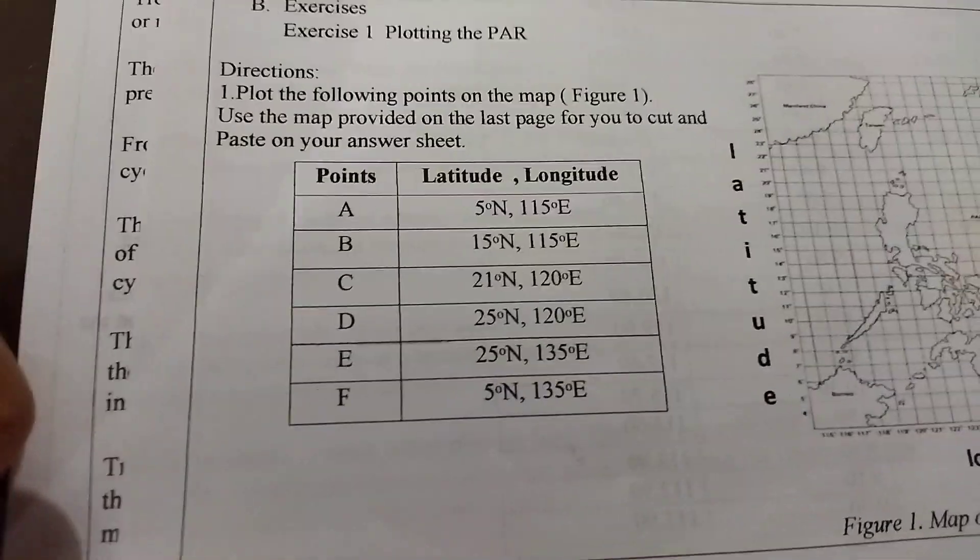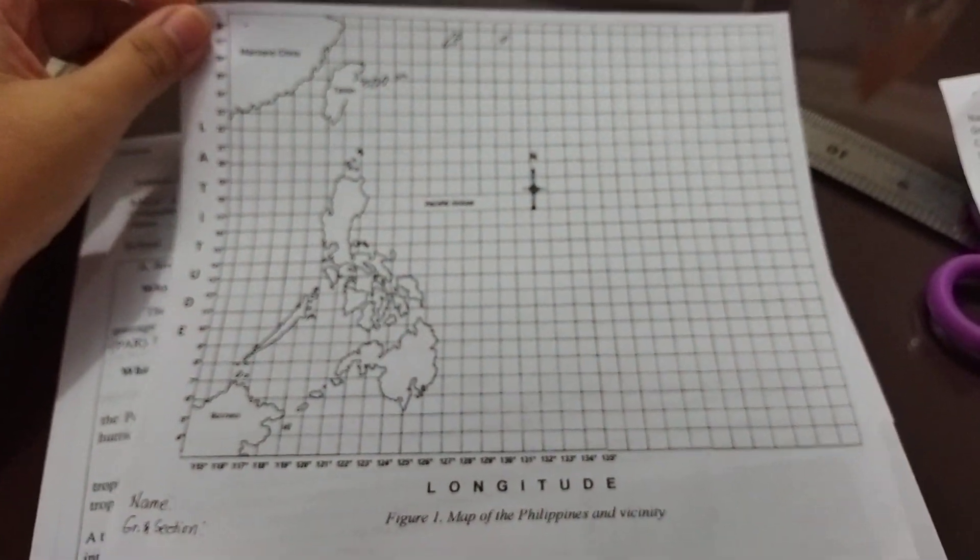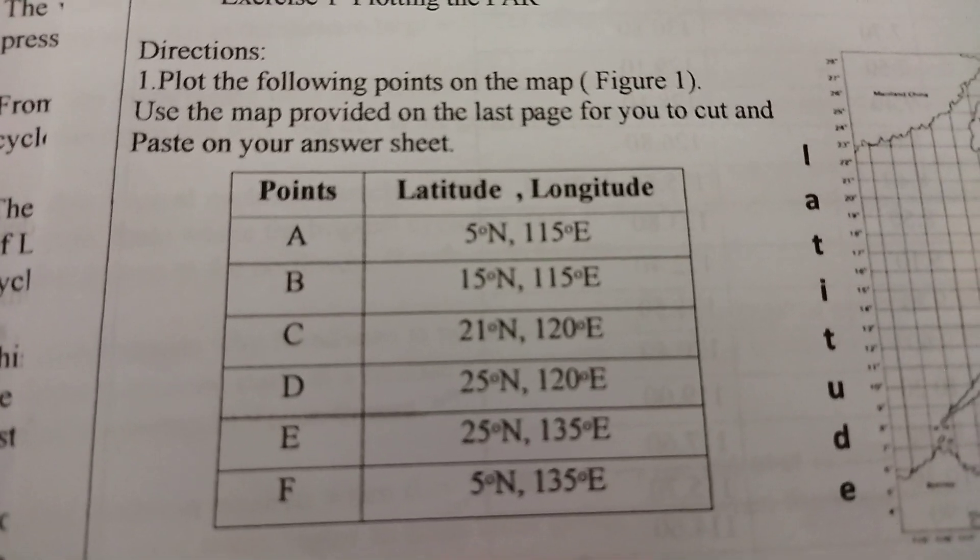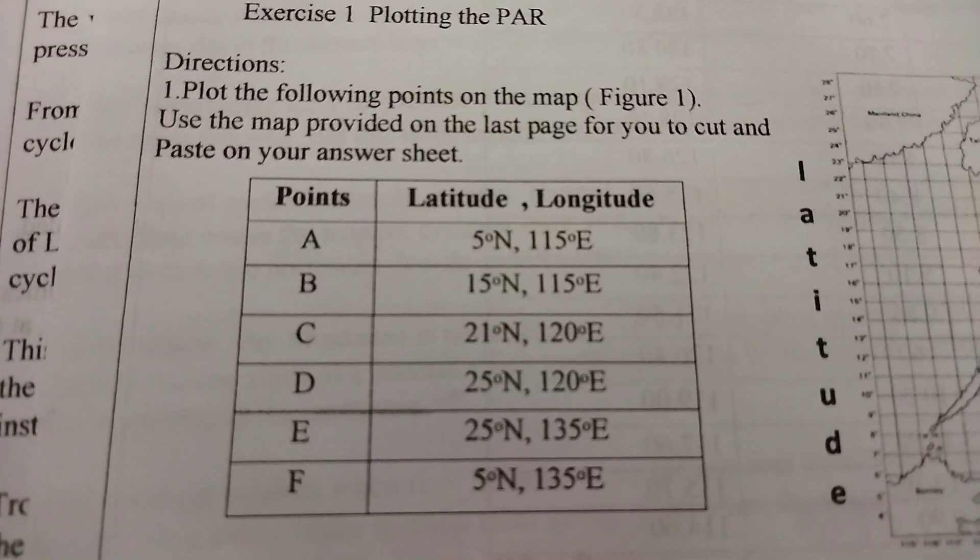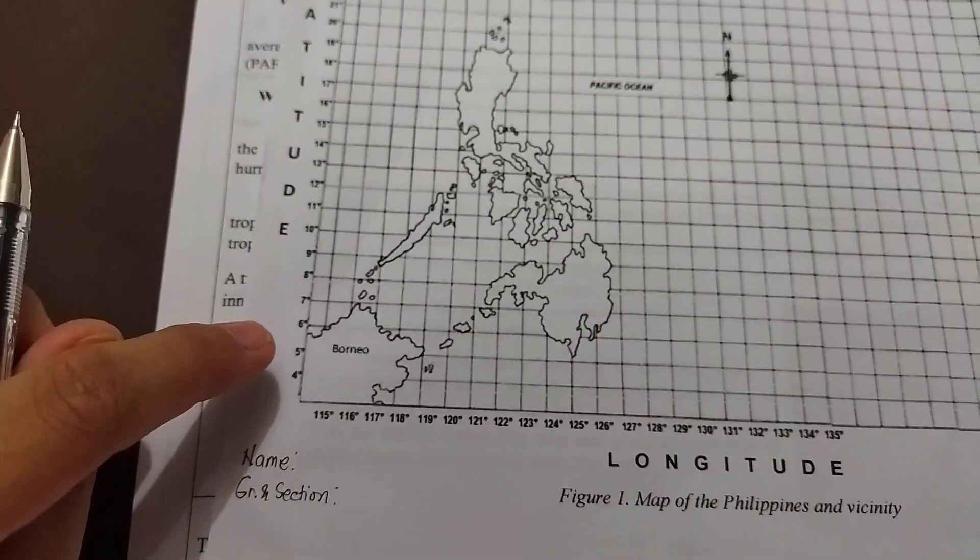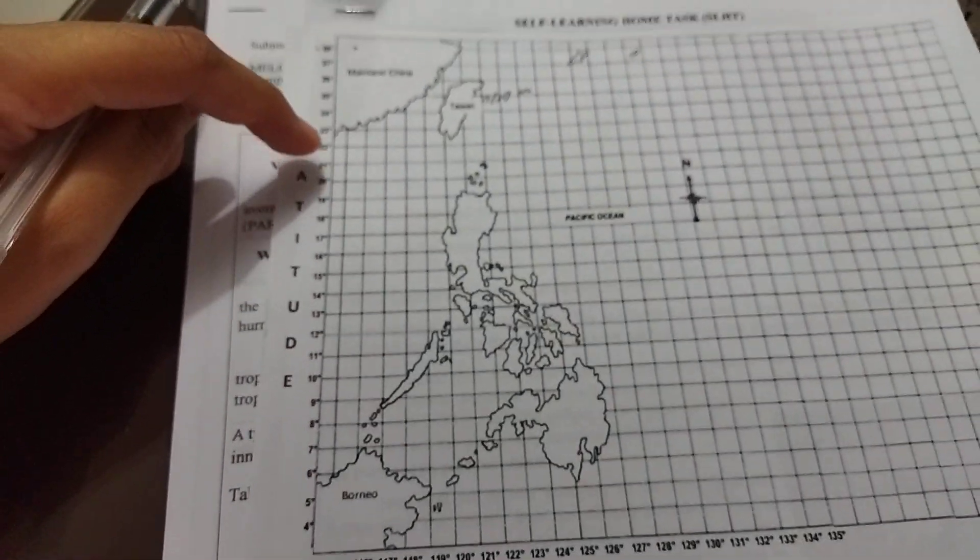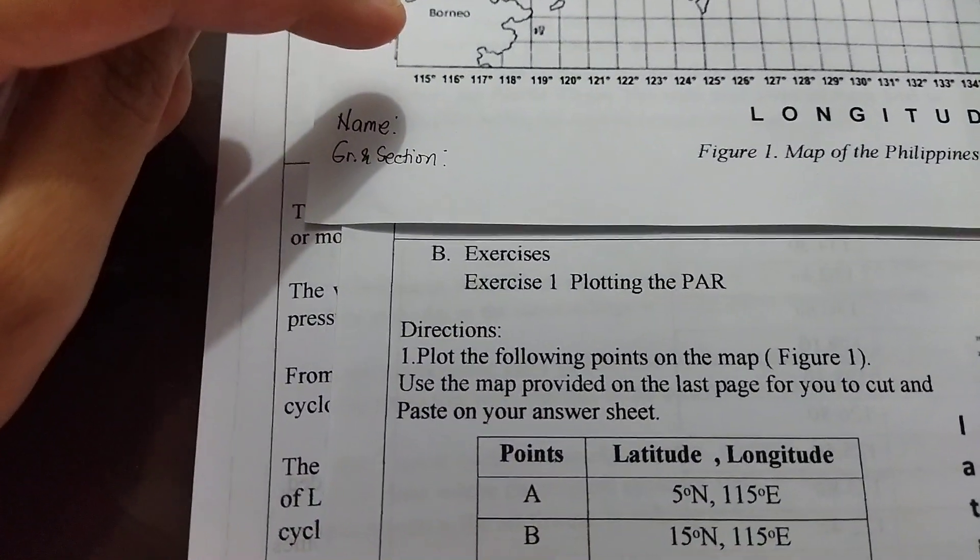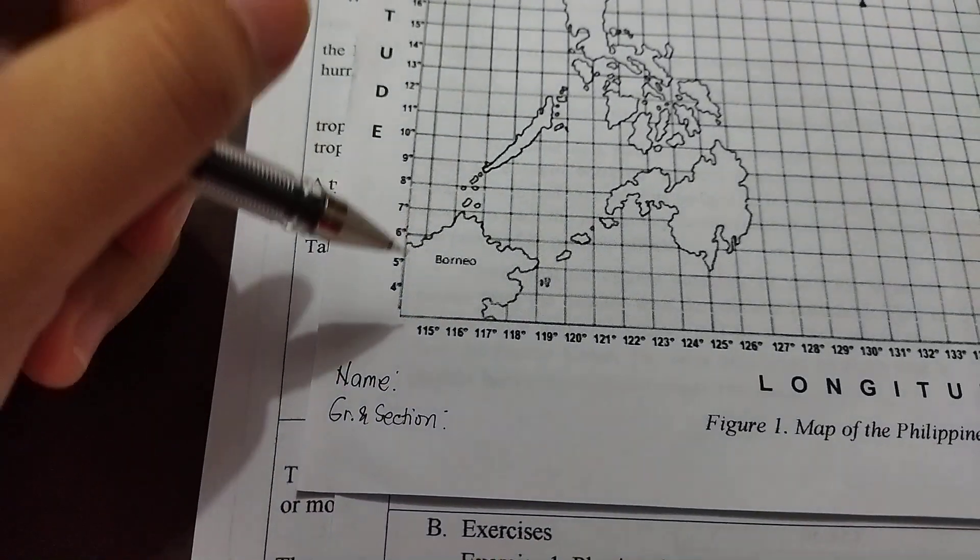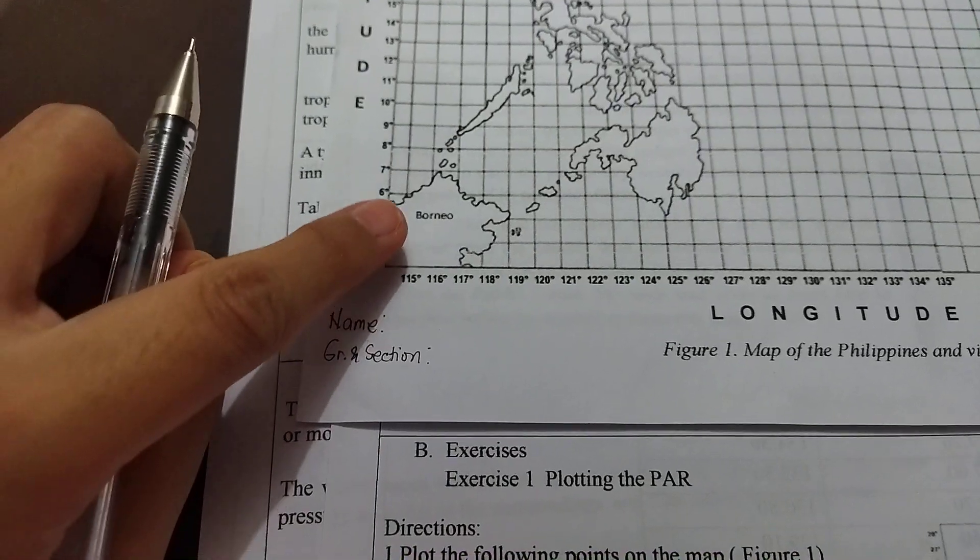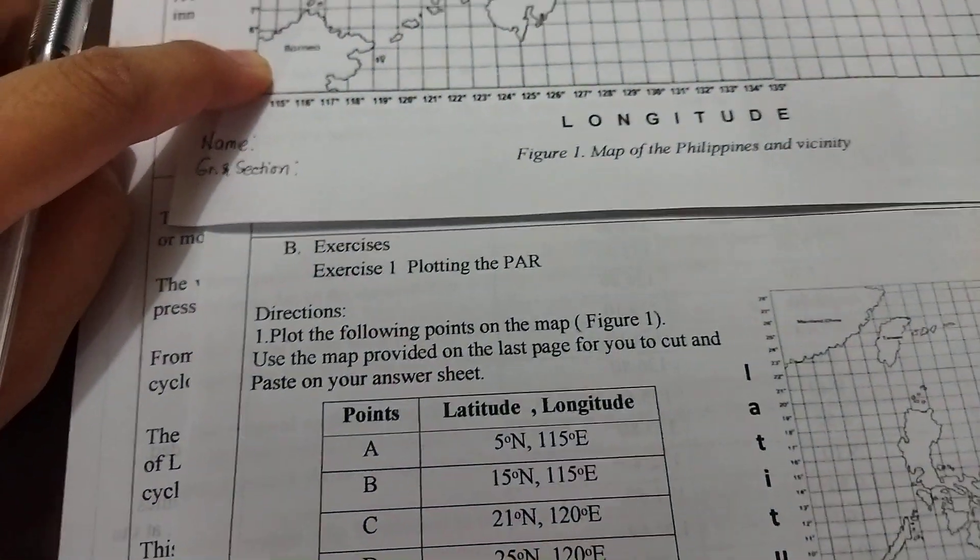How do we plot the points so that we also have points in our grades? Let's have the latitude and longitude. We have 5 degrees north and 115 degrees east. For 5 degrees north, you are going to look for that on the map. If it's latitude, all the numbers or degrees that you can find on this side. We have 5 degrees. So we have here 5 degrees. Let's point at it first and then let's find 115 degrees east. 115 degrees is right here.